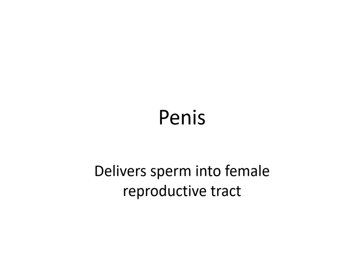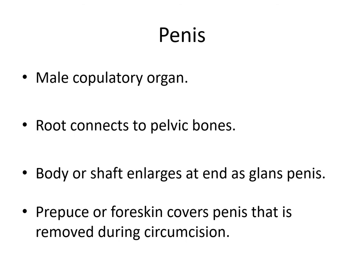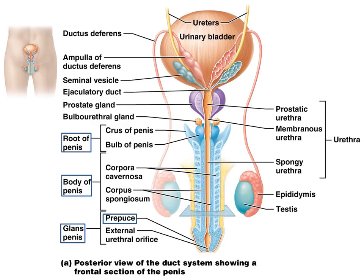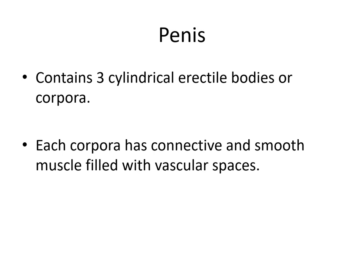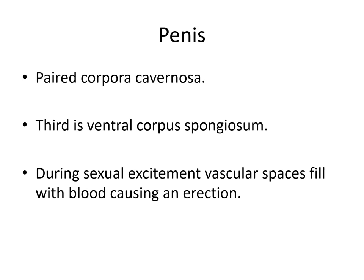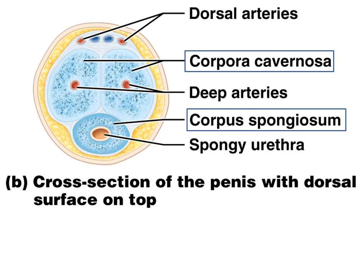The penis delivers sperm into the female reproductive tract — it is the male copulatory organ. It connects to the pelvic bones and enlarges at the end called the glans penis, which is covered by a prepuce or foreskin that's usually removed during circumcision. The penis contains three cylindrical erectile bodies called corpora. Each corpora has a muscle filled with vascular spaces that engorge with blood. There is a pair of corpora cavernosa, and a third is the ventral corpus spongiosum. During sexual arousal, vascular spaces fill with blood, causing an erection. In the cross section, we see the paired corpora cavernosa and the single corpus spongiosum with the spongy urethra passing through it.